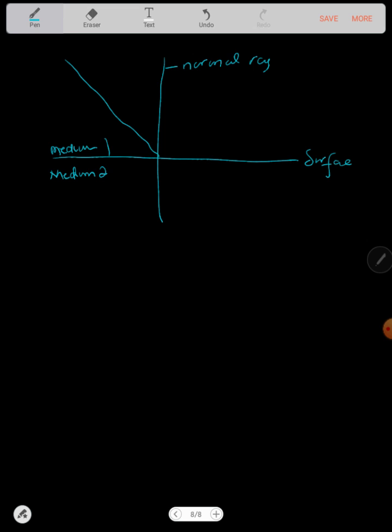So what refraction is about is that if this is a surface, we call this the normal ray. Let's call this one surface and let's call this one the normal ray. Now when light is coming from, let's call this medium one and let's call this one medium two. So when light is coming from this medium, as long as it reaches this point, as long as these two have different densities, light is going to bend towards the normal or away from the normal.